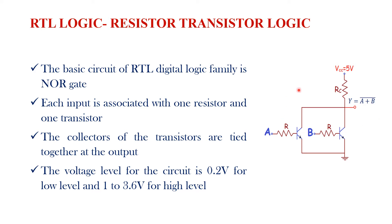Here this shows the basic circuit of RTL digital logic family, that is the NOR gate. Each input is associated with one resistor and one transistor. The collector of both transistors are connected together at the output side. The voltage level for the circuit is 0.2V for low level and 1 to 3.6V for high level.